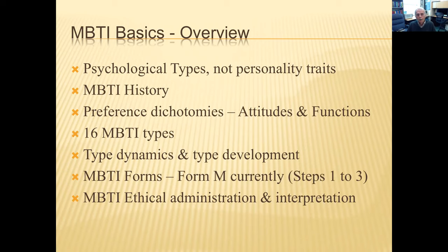The preference dichotomies in this typology include two attitudes — extroversion and introversion — and four functions: sensing, intuition, thinking, and feeling — which together yield 16 MBTI types. We'll talk briefly about type dynamics and type development. The current version of the MBTI is Form M, published by the Myers-Briggs Company, formerly called the Consulting Psychologist Press in California.